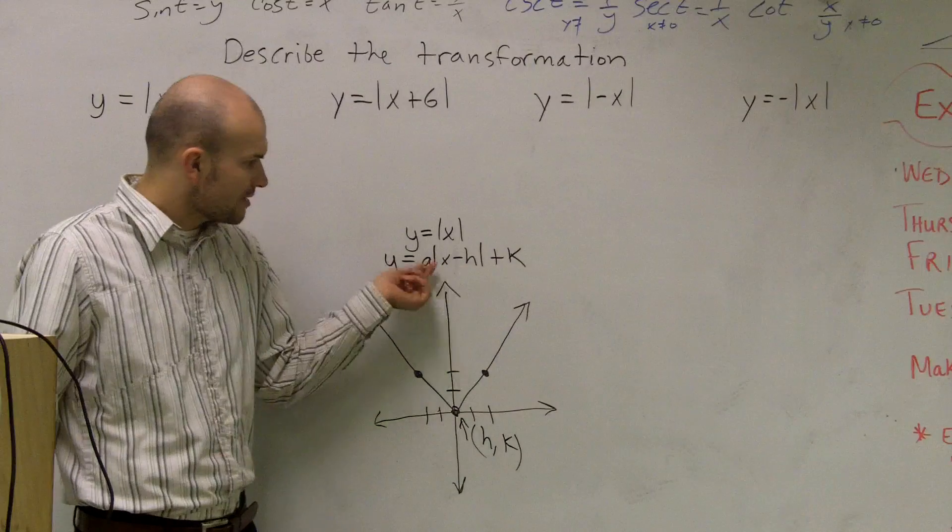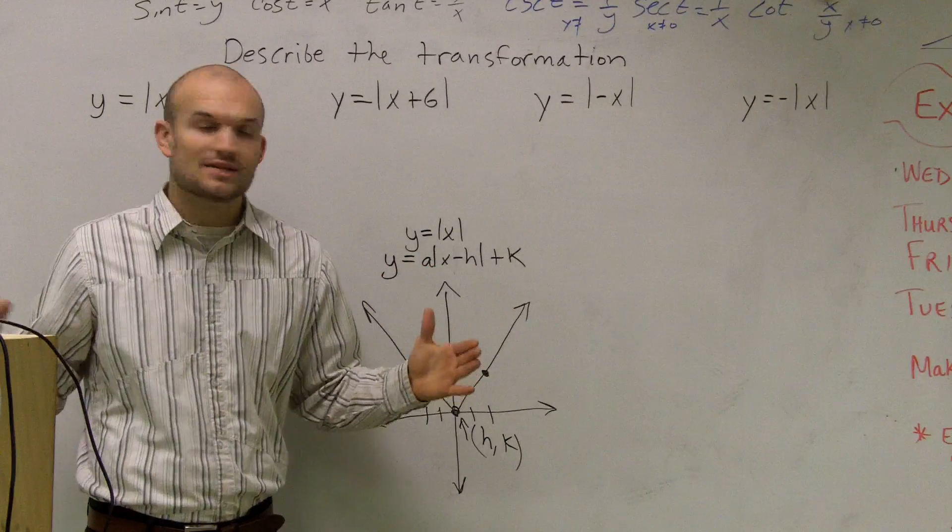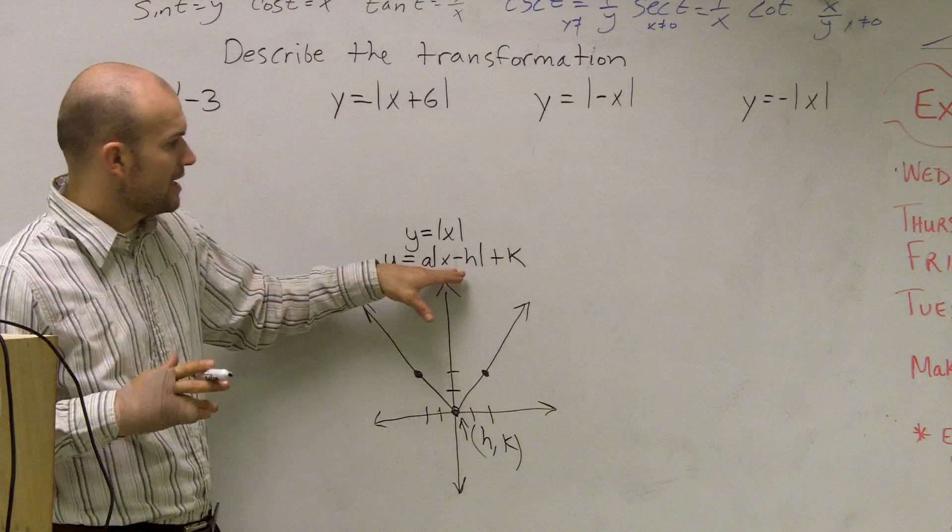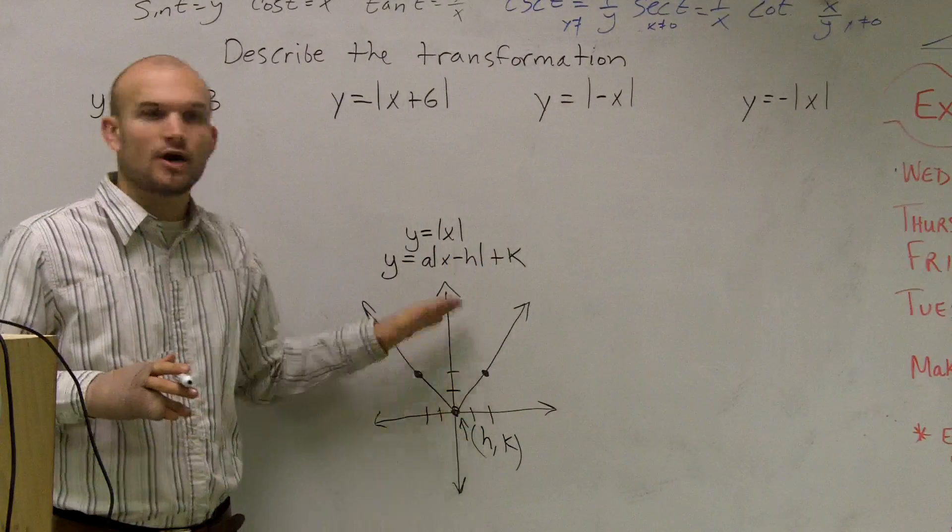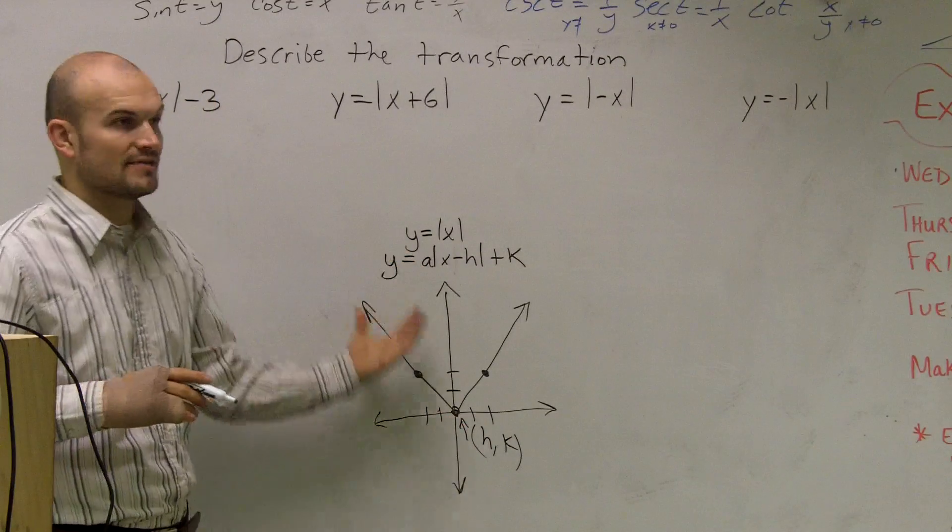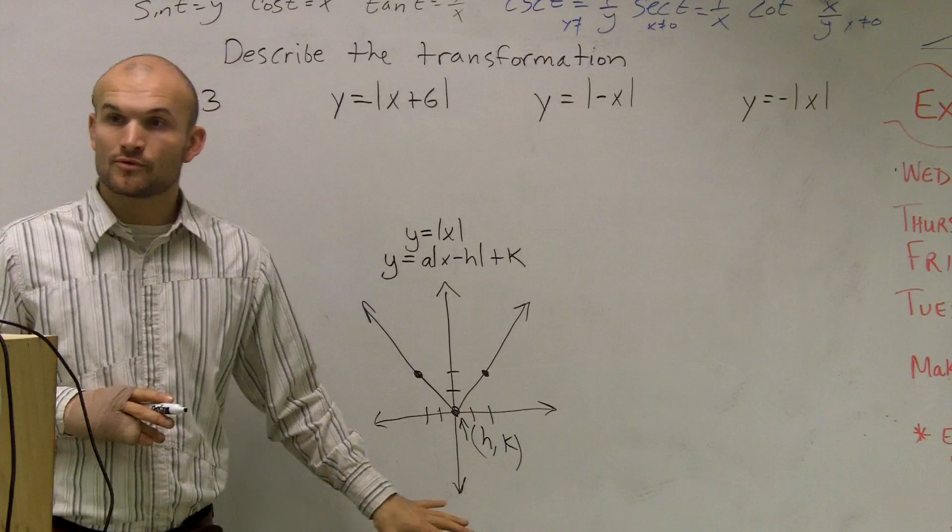And what a is going to do, a is going to help us either compress or stretch how wide or skinny our absolute value graph is. And our h or k, that's going to move our graph up or down. The other important part is also if a is positive, our graph is going to open up. And if a is negative, then it's going to be opening downwards.